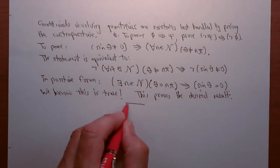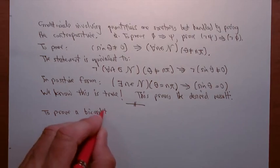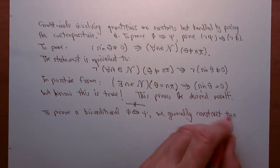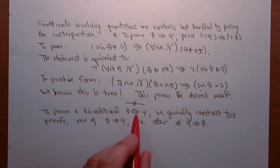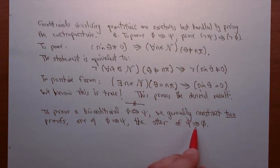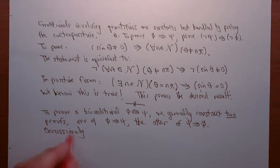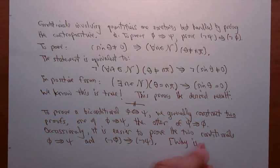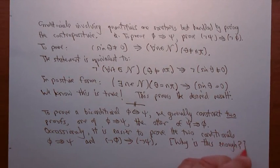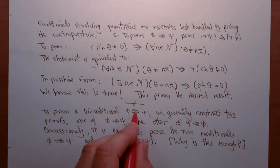To prove a biconditional φ ↔ ψ, we generally construct two proofs: one of φ → ψ, the other of ψ → φ. Since the biconditional is just the conjunction of the two conditionals, that amounts to a proof of the biconditional. Occasionally it's easier to prove φ → ψ and not-φ → not-ψ. I'll leave you to find out why this is enough — if you look back at the assignments, you should find a clue.